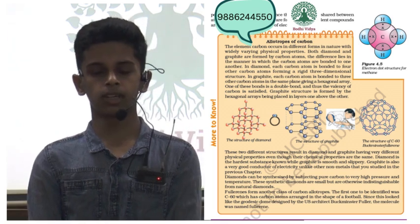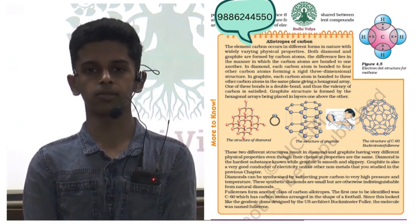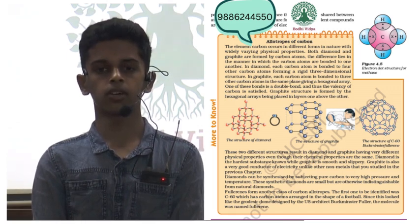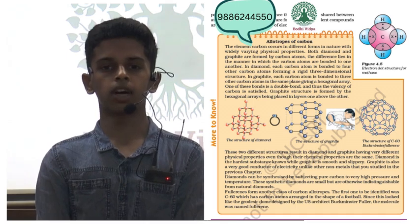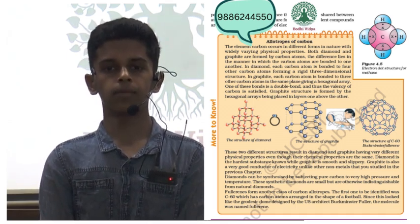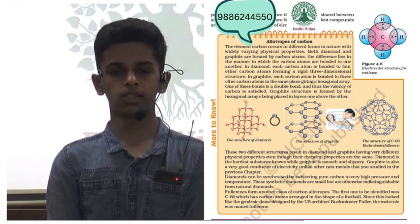Graphite is very smooth and slippery while diamond is a very hard substance. Graphite is a good conductor of electricity while other non-metals are not. We can synthesize diamond by subjecting pure carbon to high heat and pressure, and though the synthesized diamonds are smaller than natural diamonds, they are indistinguishable from natural diamonds.